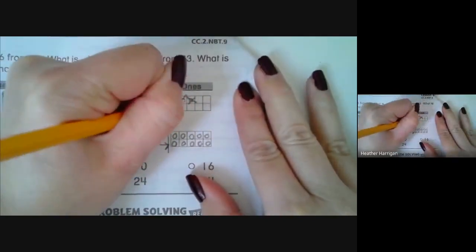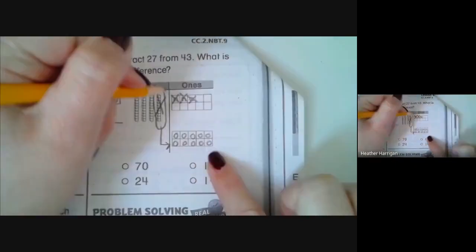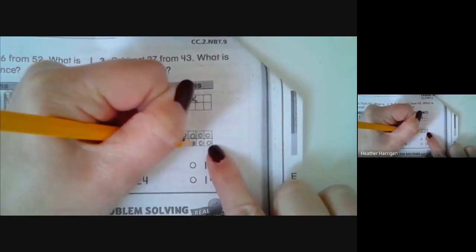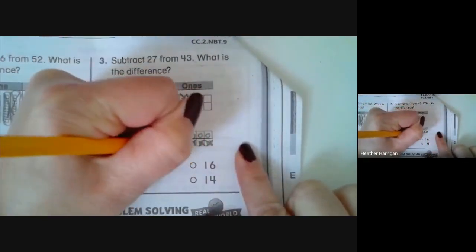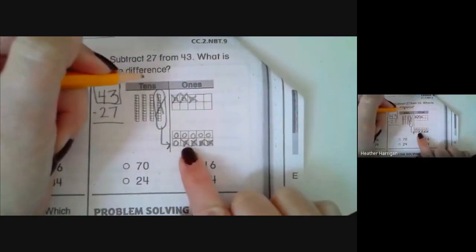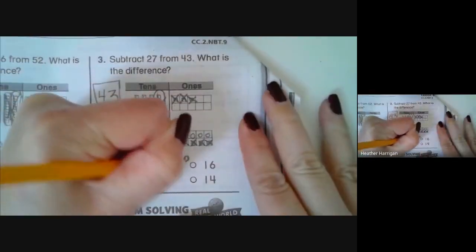Now we can take away our seven ones. So we cross out one, two, three, and then I have them crossed out from the bottom row. Four, five, six, seven. And there are six ones left, so I have them put a six.